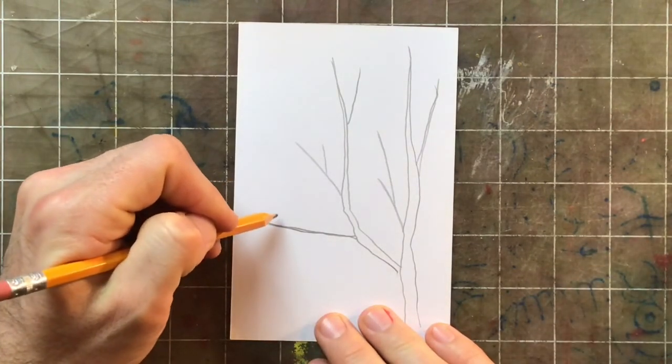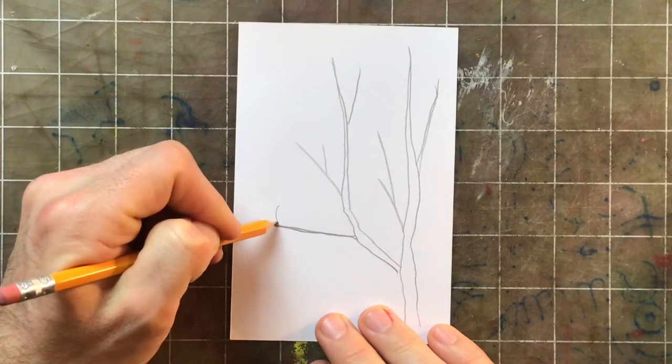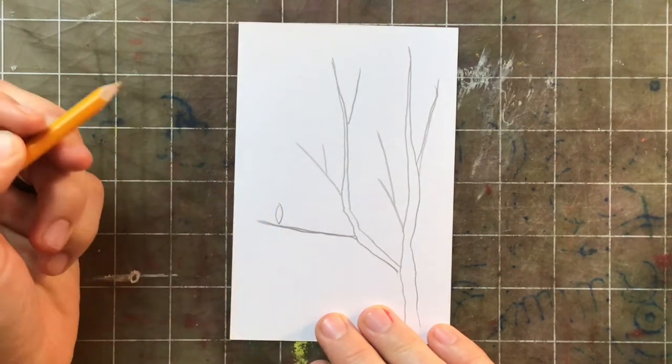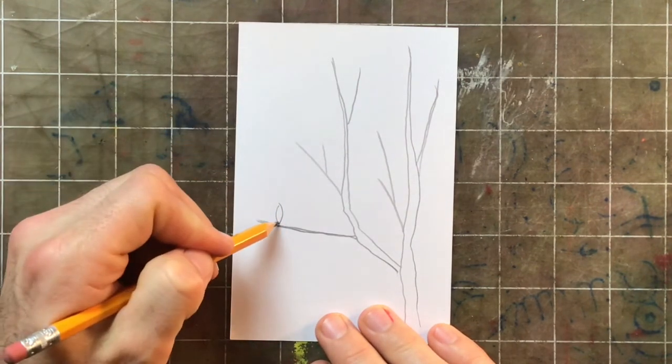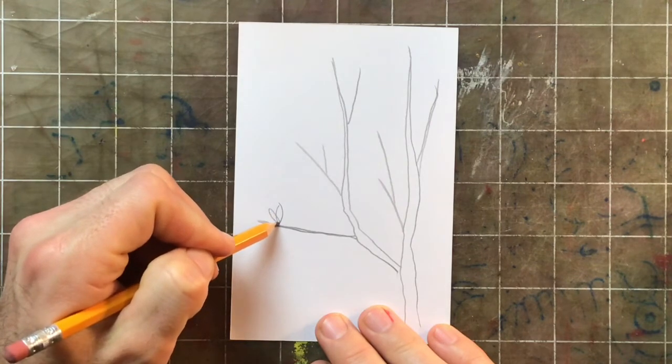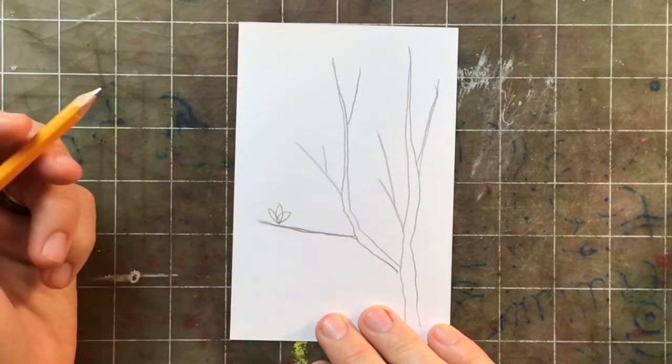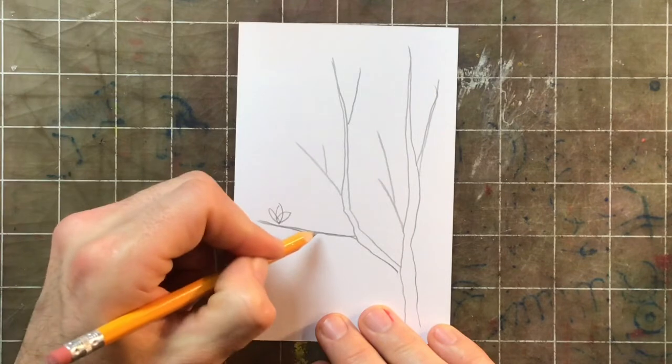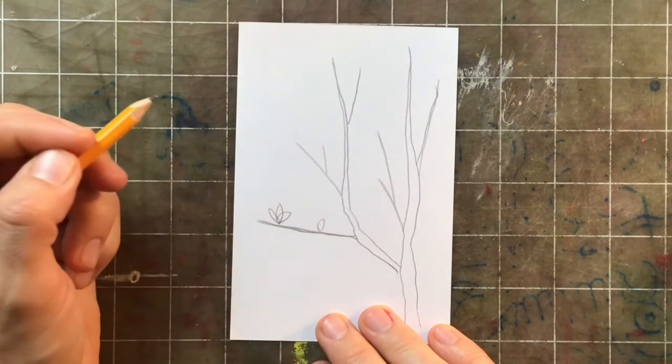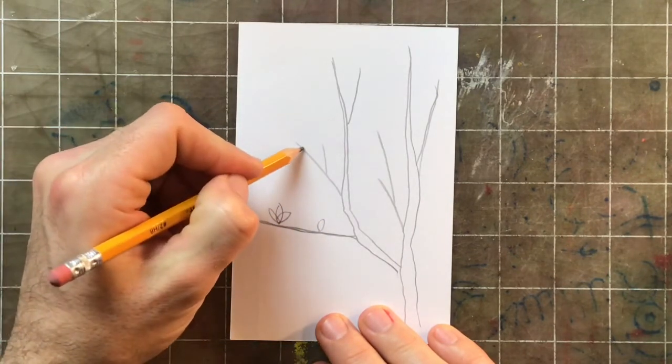Now, I'm going to start using that teardrop shape. Leaf shape. To make some buds on the tree. Those are flowers that haven't grown yet. This one has already grown. There we go. Got a couple of buds. And a couple of flowers.